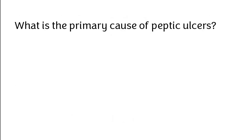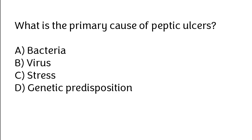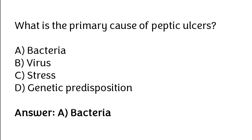What is the primary cause of hepatitis? Ulcers, bacteria, virus, stress, genetic predisposition. The correct answer is option A: Bacteria.